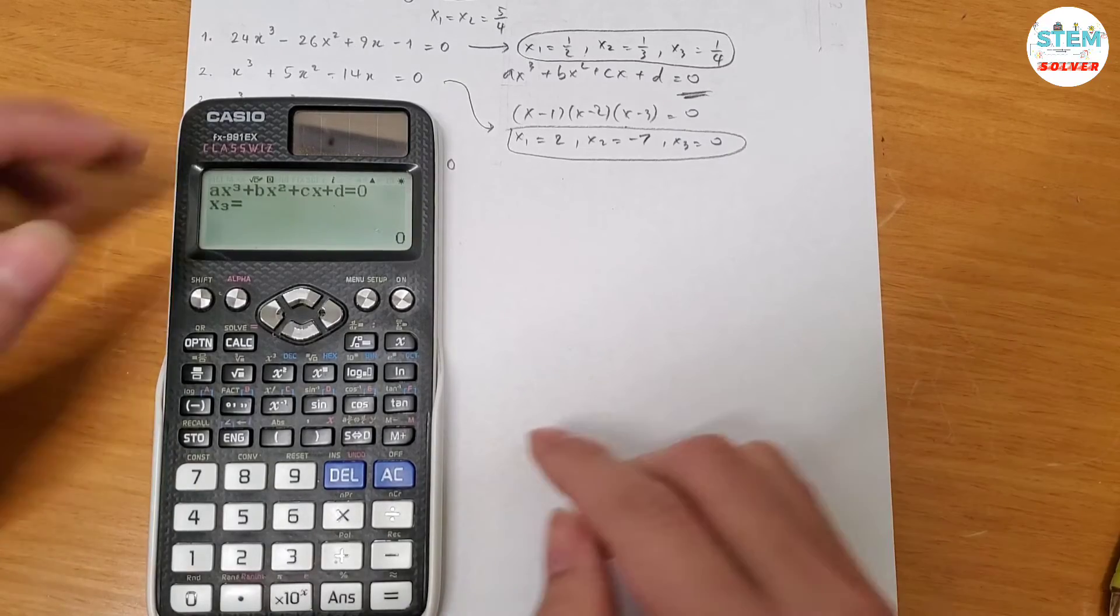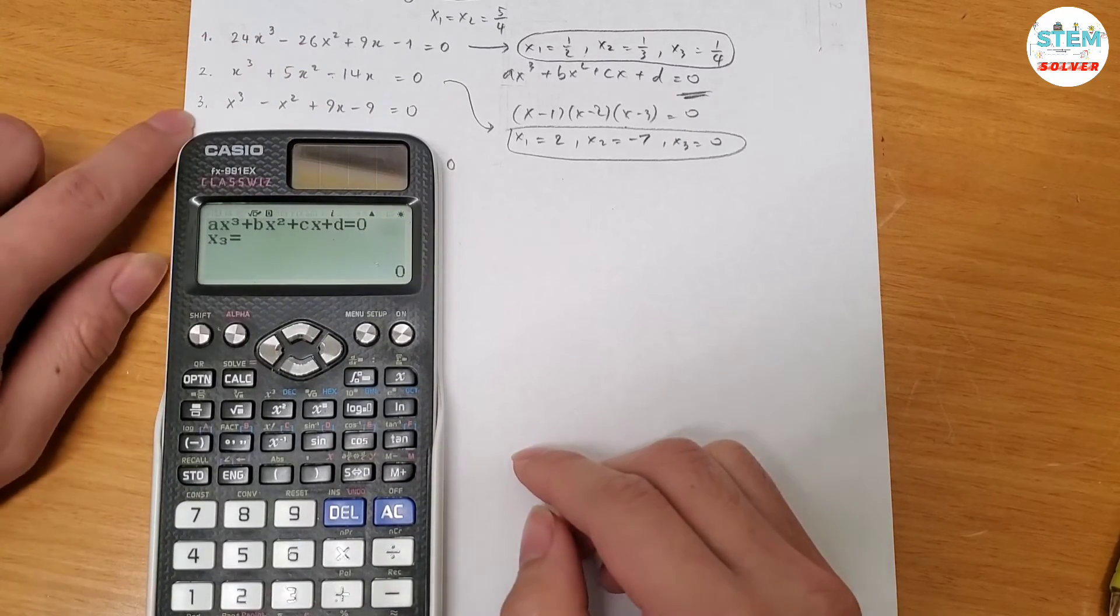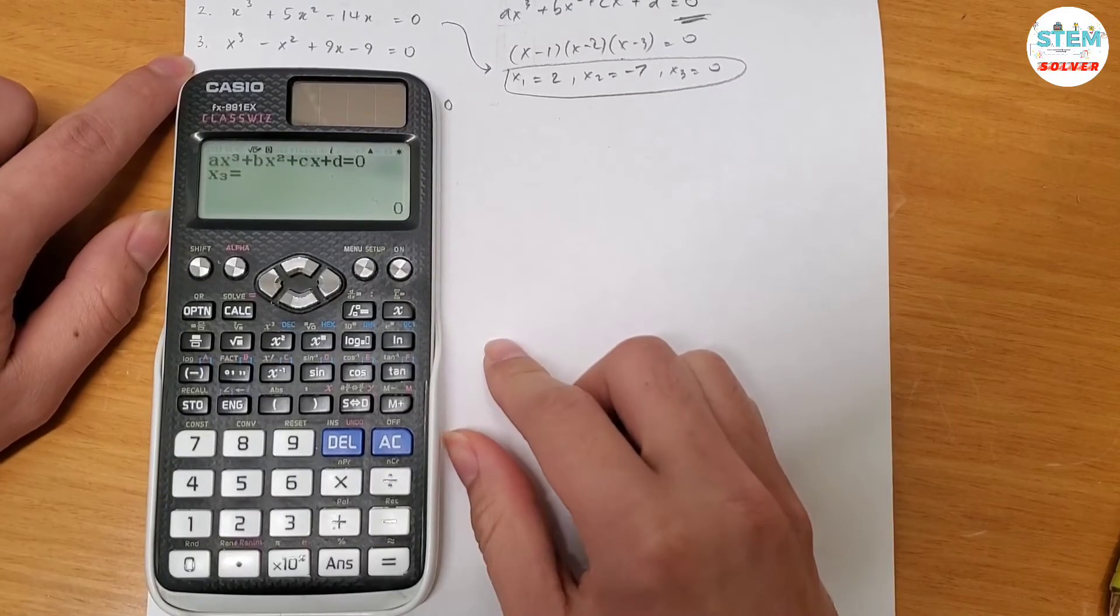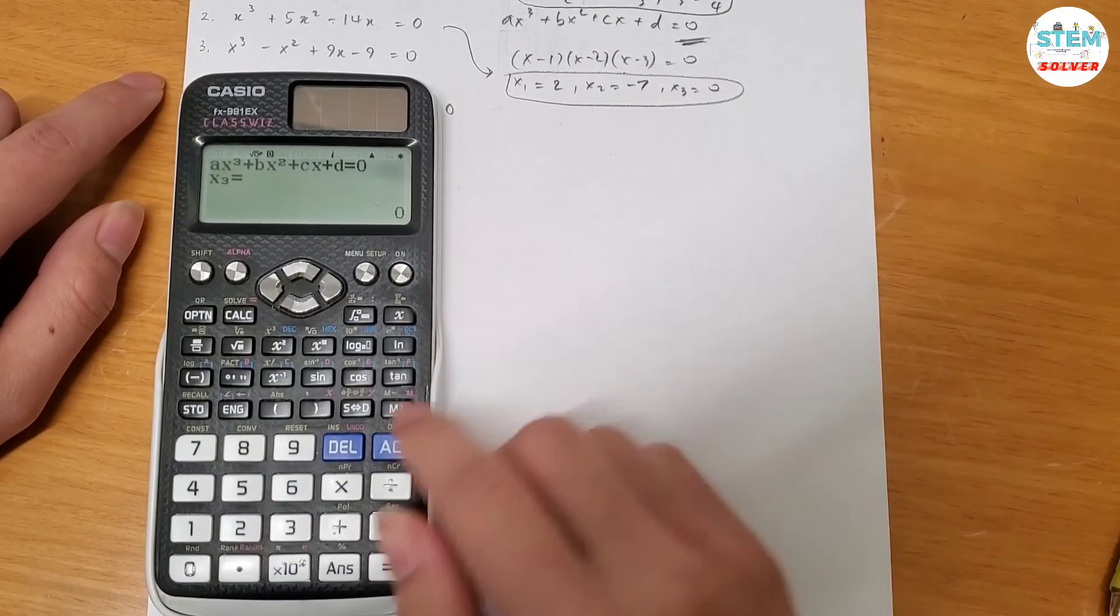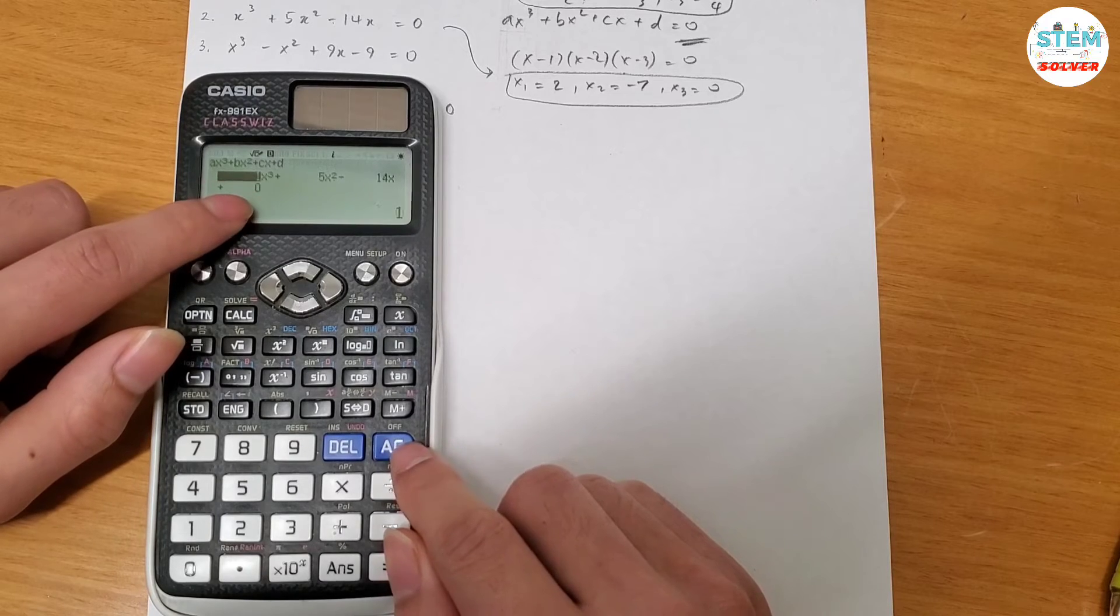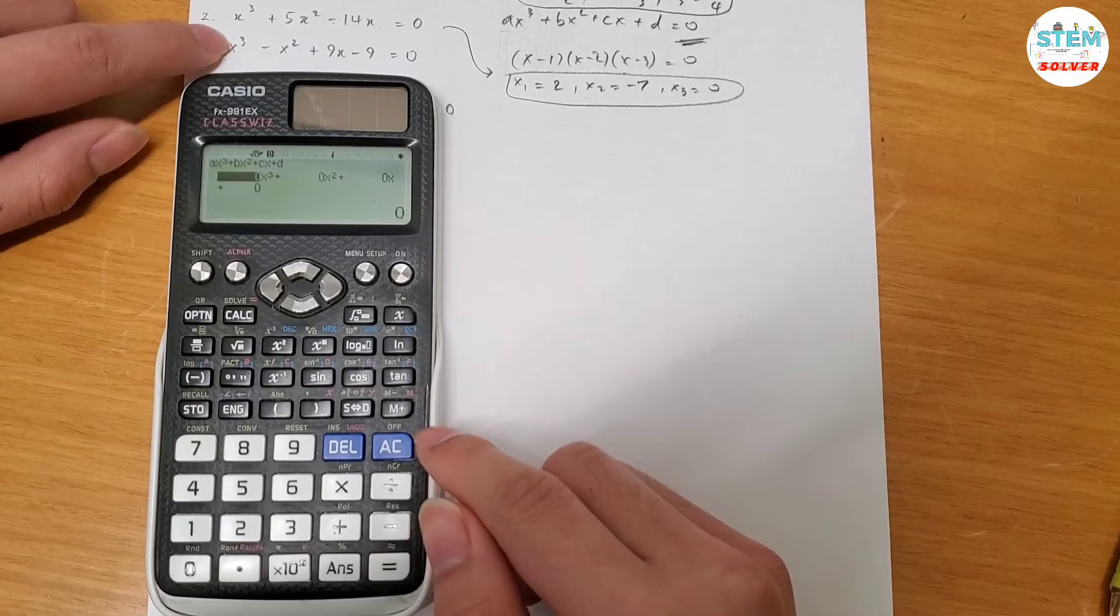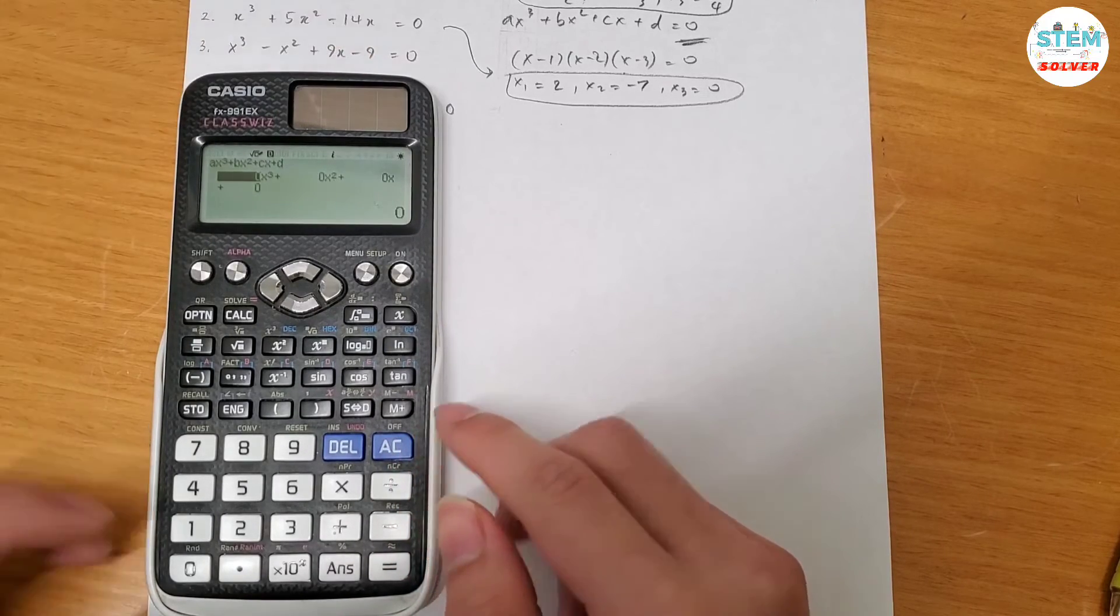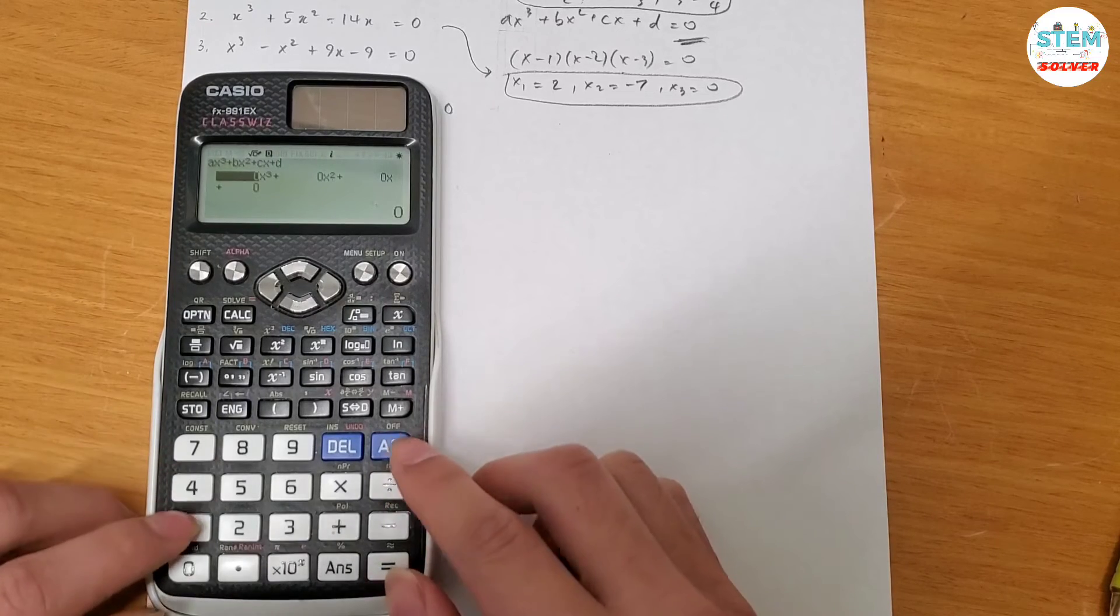Let's go over another example. So look at this example. Hit AC to clear all the variables or all the constants. Then I have x cubed x squared x, x to 0 which is 1. Just type in the coefficient.